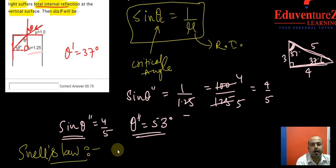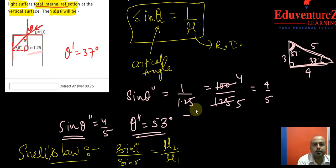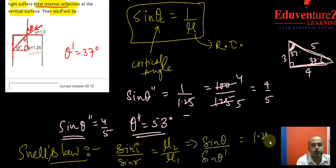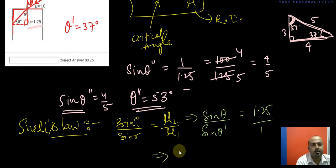According to Snell's law, we know that sine i upon sine r is equals to mu 2 upon mu 1. So angle of incidence is theta, sine theta angle of refraction is sine theta theta dash and mu 2 is 1.25 and mu 1 is 1 and we know the value of theta dash as sine 37.